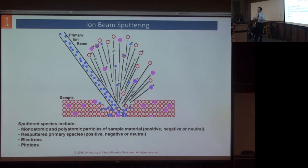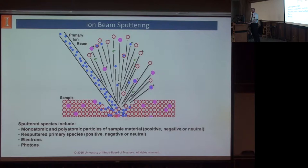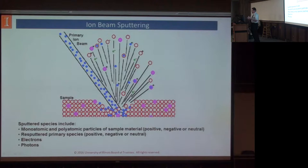Ion beam sputtering is a very complicated thing. We have primary ions coming down and hitting the surface. The red circles represent atoms in the material, and the blue ones are our sputter beam. The sample gets all mixed up — we have dopants in there, and out comes all kinds of things: positive and negative ions, mostly neutral species. Some beam gets resputtered back. The crater tends to have amorphous material and lots of bond breaking. We can also get photons and electrons out — there's a lot going on.